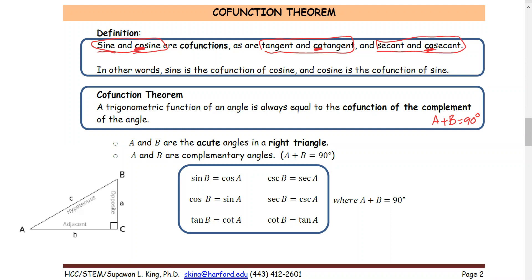For example, sine and cosine are co-functions, and a and b are complementary angles. Tangent and cotangent are co-functions, and b and a are complementary angles. So we say: sine of b equals cosine of a, cosine of b equals sine of a, tangent of b equals cotangent of a, and cosecant of b equals secant of a, because cosecant and secant are co-functions where a and b are complementary angles.